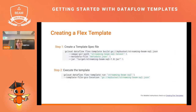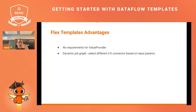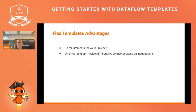The build and execute part of the flex template looks like the following. You use the gcloud command-line tool with the build command to create the template spec file, which sits in a Cloud Storage bucket. Whenever you want to run the pipeline, you refer to that template spec file and run the pipeline. Compared to traditional templates, there's no need to have the ValueProvider class in your implementation. You are also able to create a dynamic job graph where you can have, for instance, different IO connectors as input based on certain parameters that are submitted when the template gets executed.